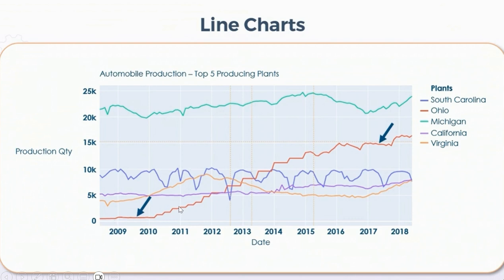Each line is representing three variables simultaneously. This is automobile production for the top 5 producing plants — the state of South Carolina is represented by blue, Ohio by red, Michigan by green, California by purple, and Virginia by yellow. We can see the comparison of all five productions. The state of Michigan has maximum production in all the years. From 2009 to 2012, the state of Ohio had minimum production, and in later years, the state of Virginia has minimum production over time.